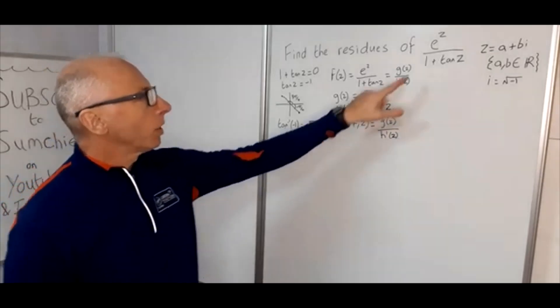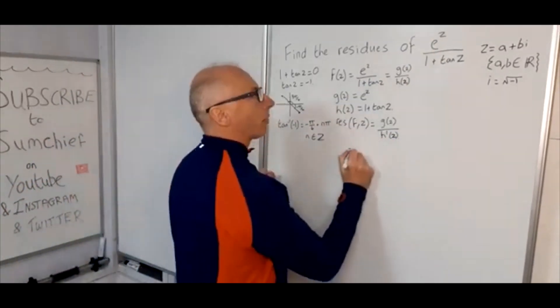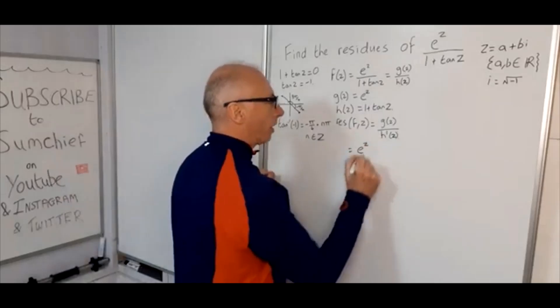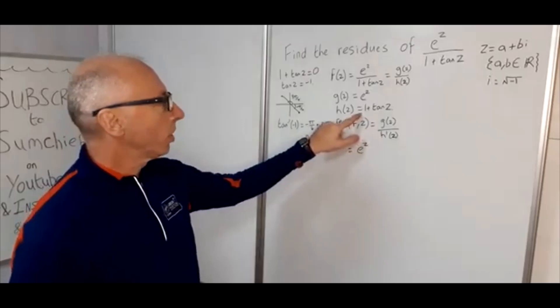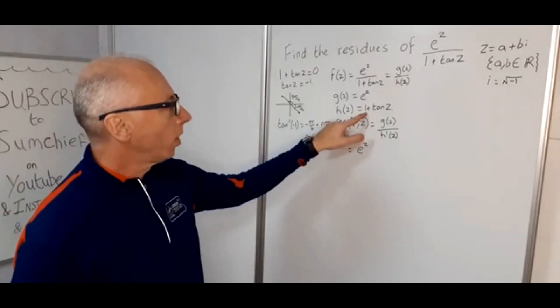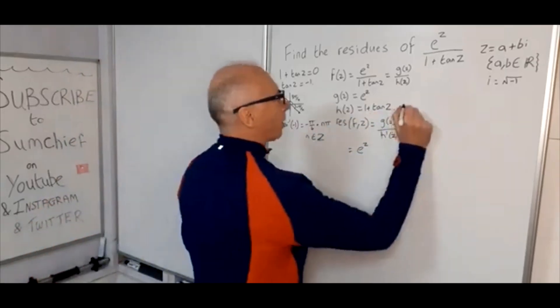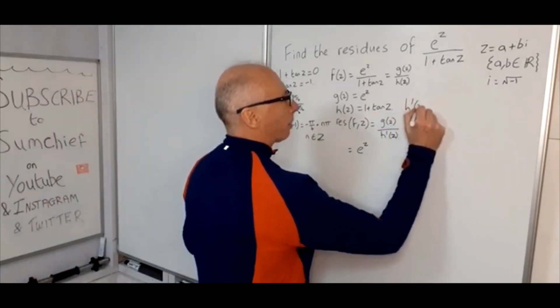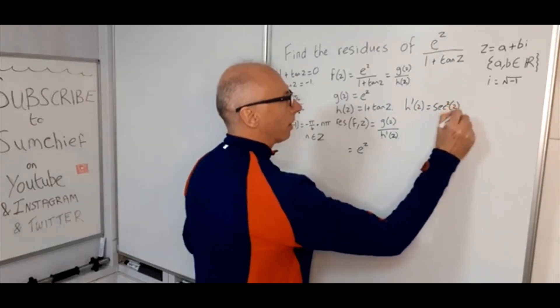So g(z), we're just going to leave as e^z. So we're left with e^z, and now we need to take the derivative of our function h. Well, the derivative of 1 is 0. Derivative of tangent is a well-famous one. So h prime of z is sec²(z).